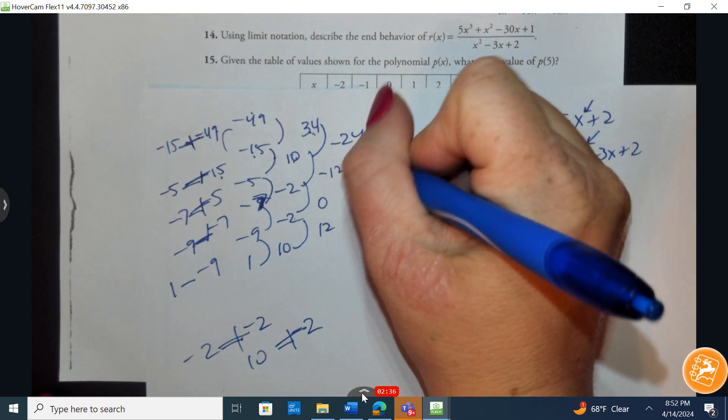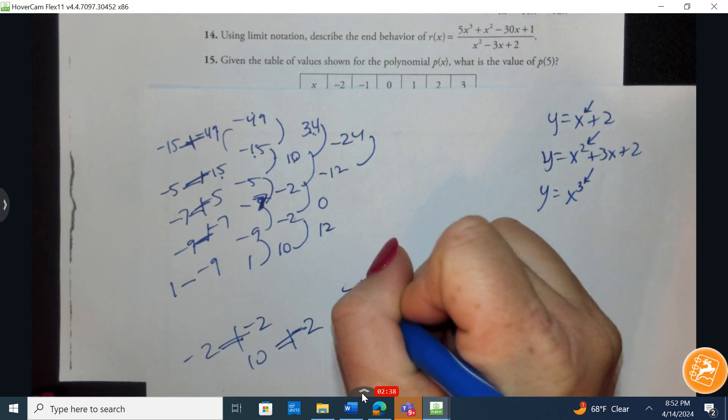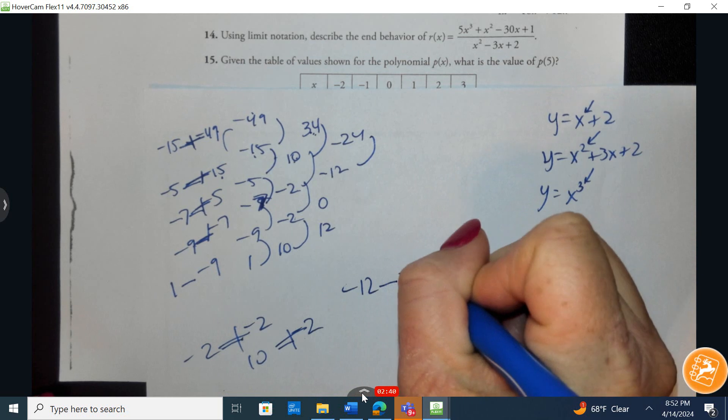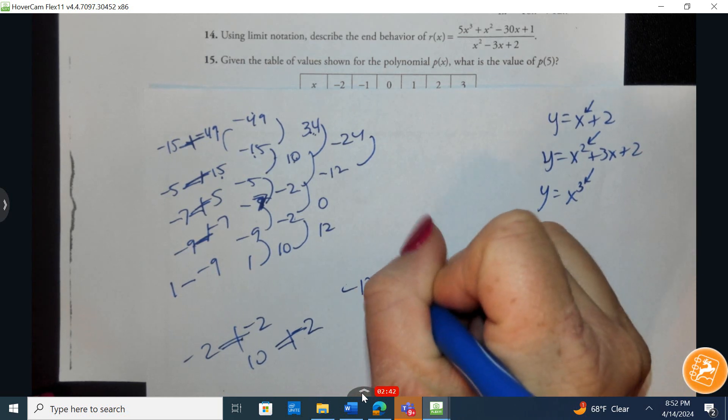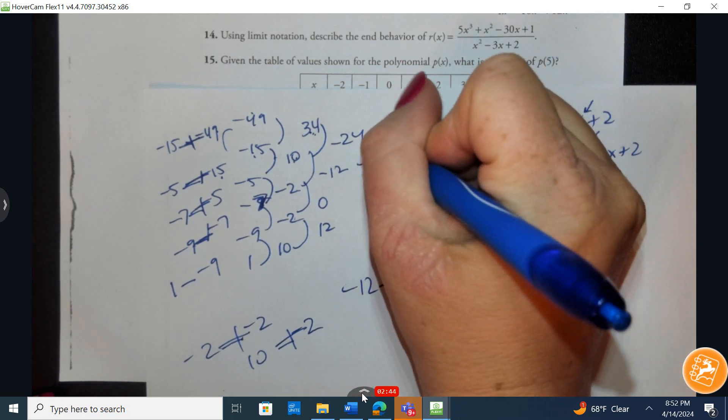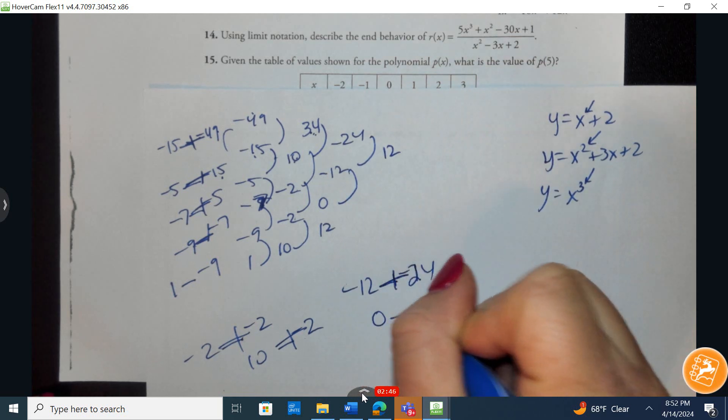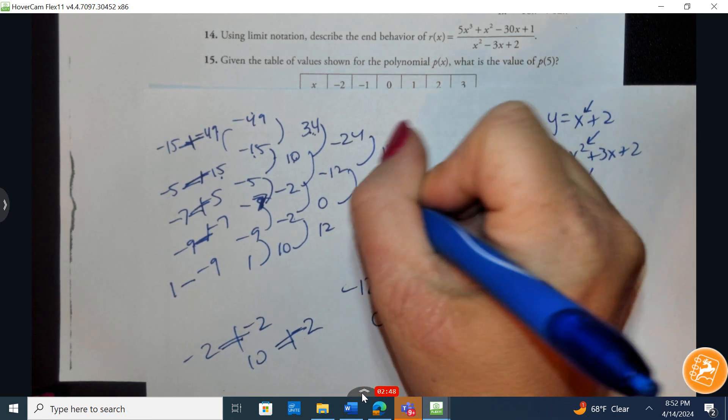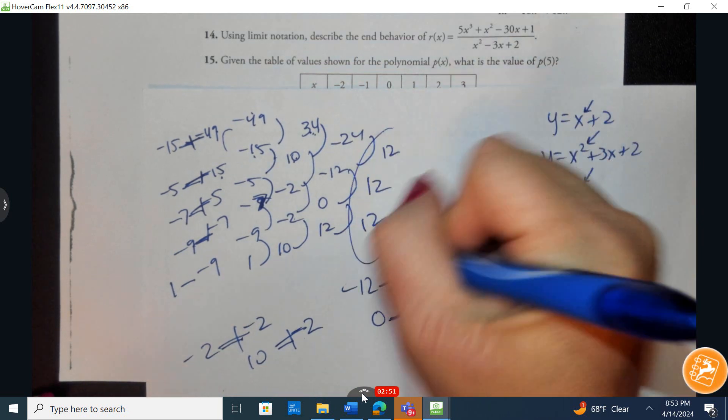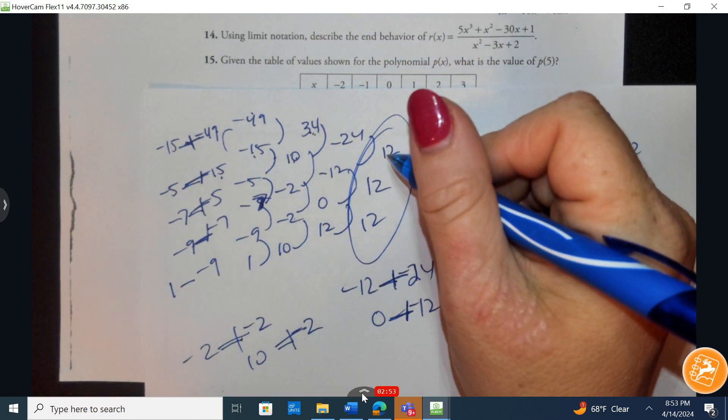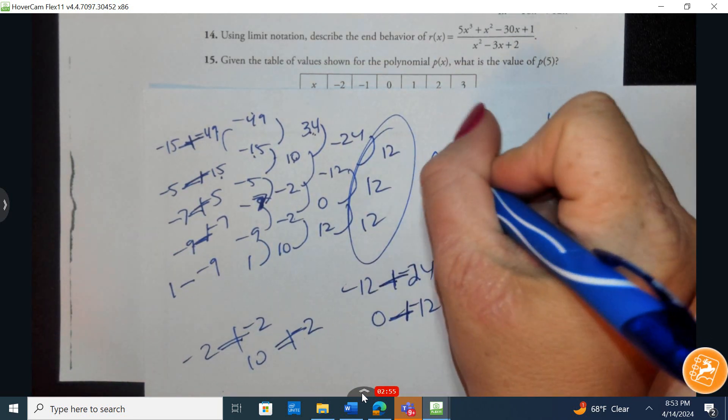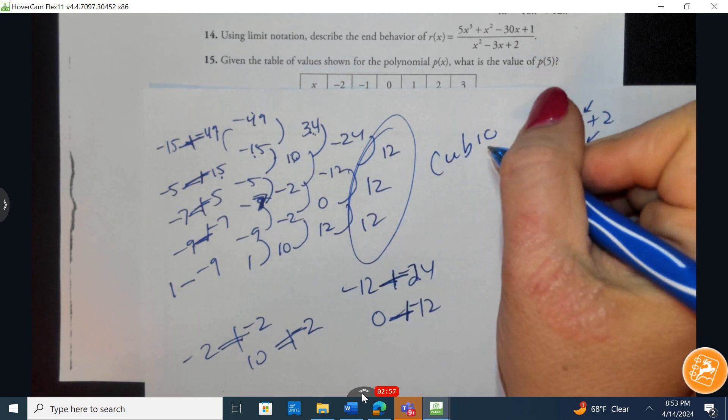So I have negative 12 subtract negative 24. Two negatives make it positive, I'm left with positive 12. Zero subtract negative 12, two negatives make it positive, I'm left with 12. 12 subtract 0 is 12. So because the third difference is all the same, I know this is going to be degree 3, it's going to be cubic.